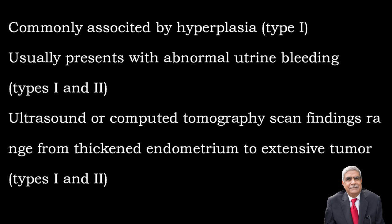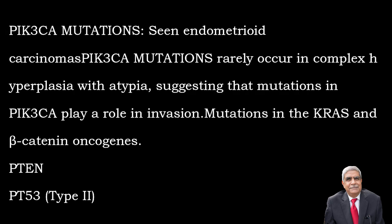Endometrial carcinoma is of two types: type 1 and type 2. Type 1 is seen at the age of 55 to 65 years, whereas type 2 is seen at 65 to 75 years. Patients with type 1 are obese, while those with type 2 are thin and lean. The predisposing factor in type 1 is endometrial hyperplasia, whereas the endometrium is atrophic in type 2. Genetic mutation is PTEN or PI3K in type 1, whereas it is P53 mutation in type 2.